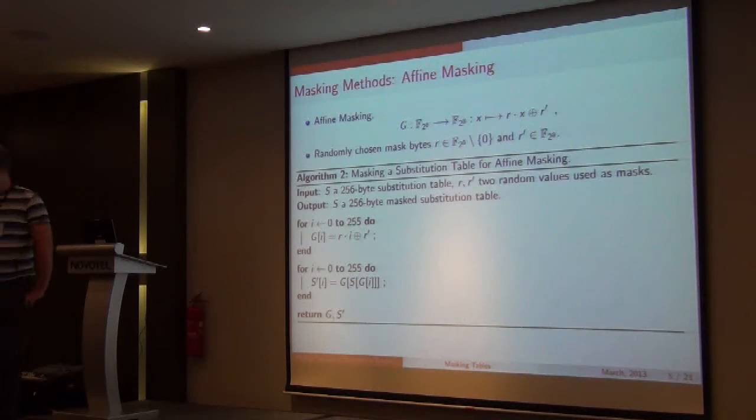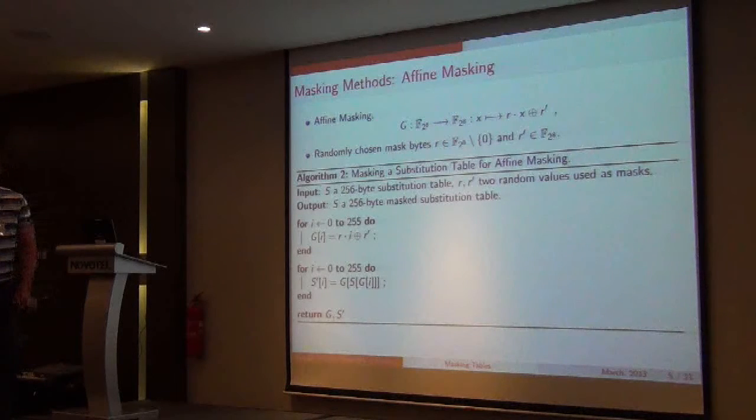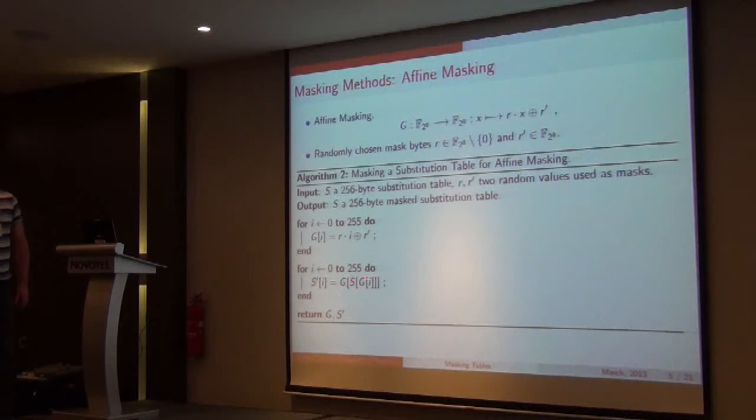So another proposition was affine masking for AES. We're using the structure of AES. So we have two masks again. One is a multiplicative mask and one is an additive mask. We're obliged to construct one table that allows us to map X to R times X XOR R prime. And the second table is then constructed S prime where the index and the data itself are masked using our masks. In all cases, this has to happen before we can actually compute our AES.